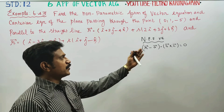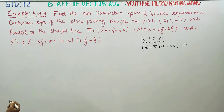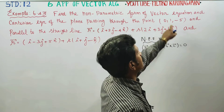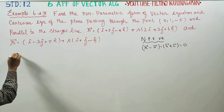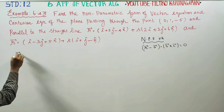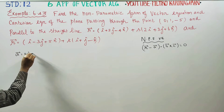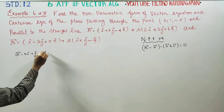In the formula, how do we find b cross c? First of all, it passes through a point. For the first point, we will get a vector.